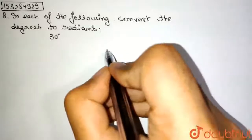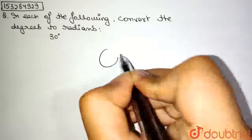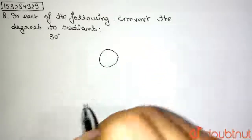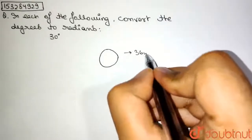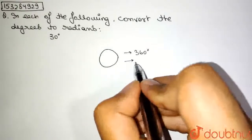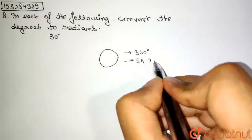Now, we know that in a circle, the total angle in degrees is 360 degrees or 2π radians.